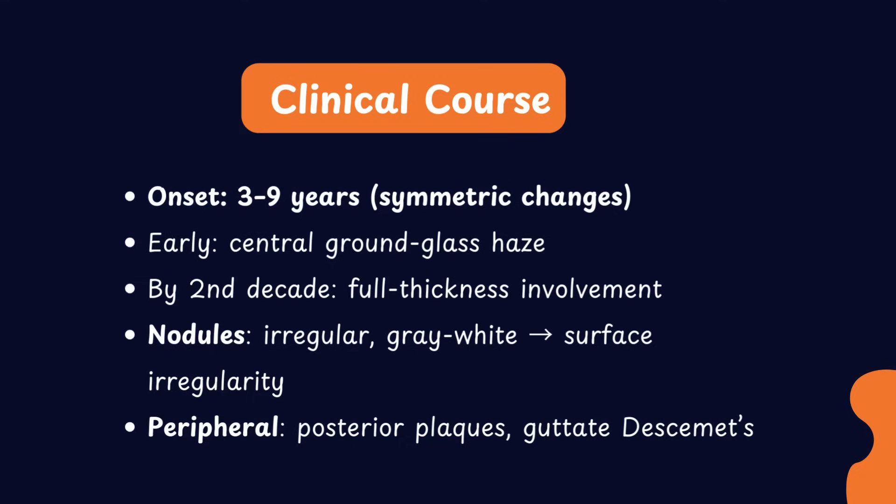In the peripheral cornea, deep posterior plaques may also be seen. Diffuse grayness and involvement of Descemet's membrane can sometimes lead to the appearance of guttae. These progressive changes explain the gradual loss of vision and sometimes severe visual impairment in macular dystrophy by the twenties or thirties.